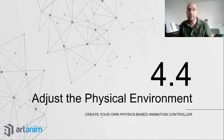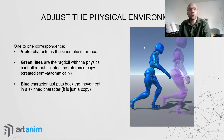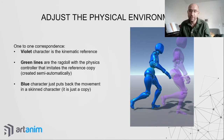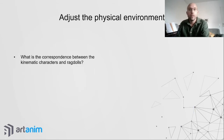The next thing to understand is how to adjust the physical environment. In our framework, a reference animation is controlled by a kinematic controller — shown as the violet object — with green lines representing the ragdoll that imitates the pose. The blue character is a mapping of that ragdoll back to a skinned character, which is what you'd want for a normal video game.